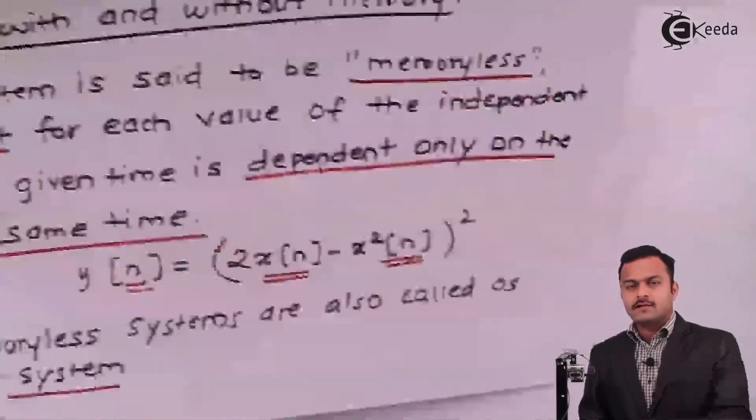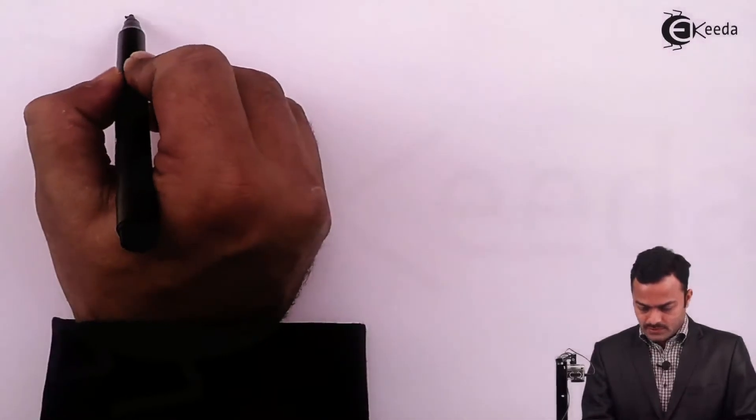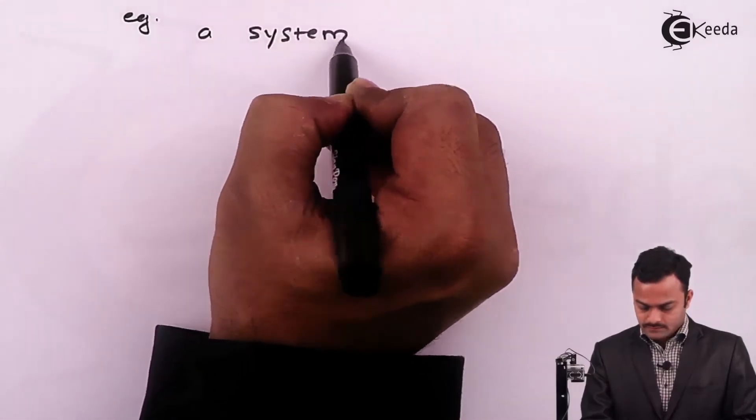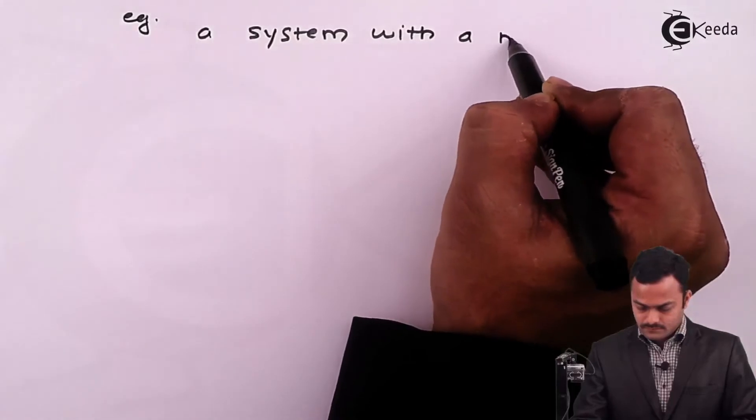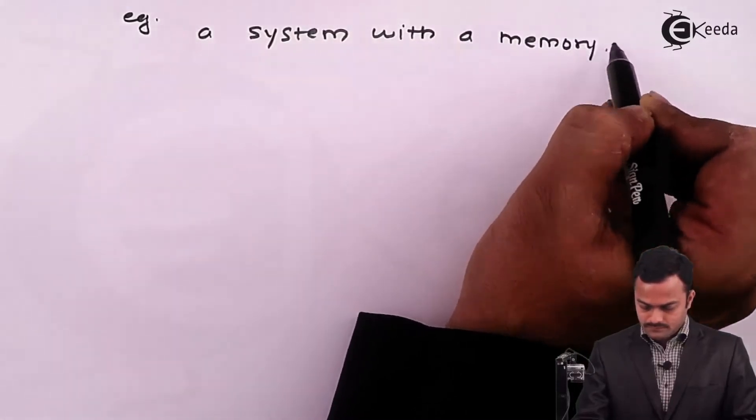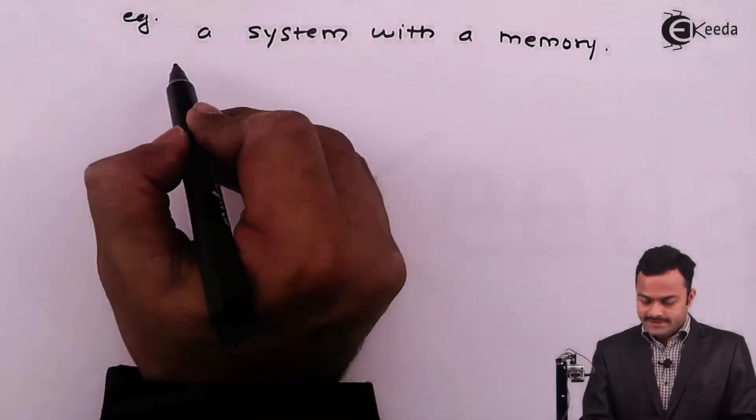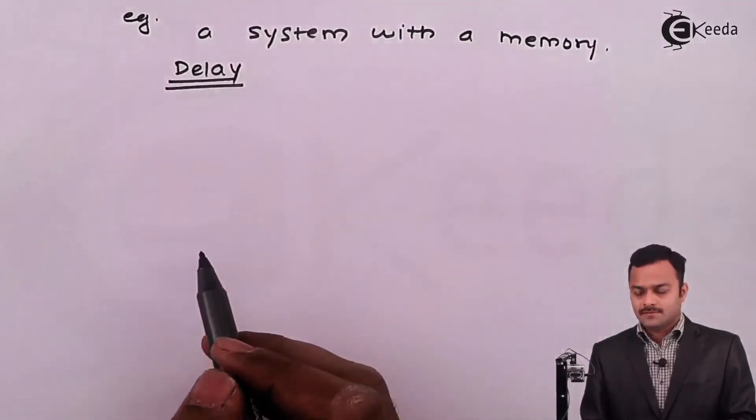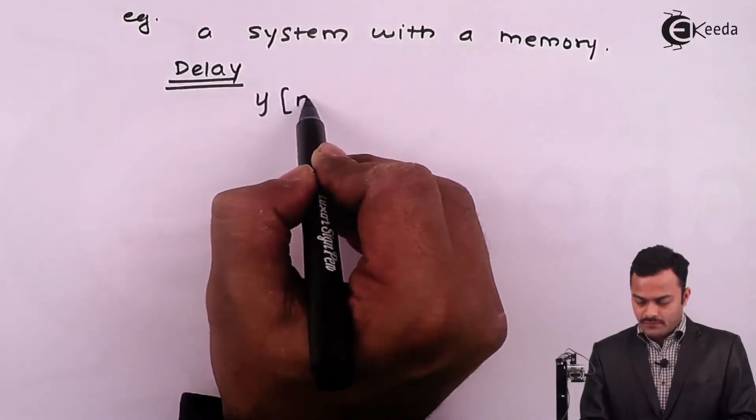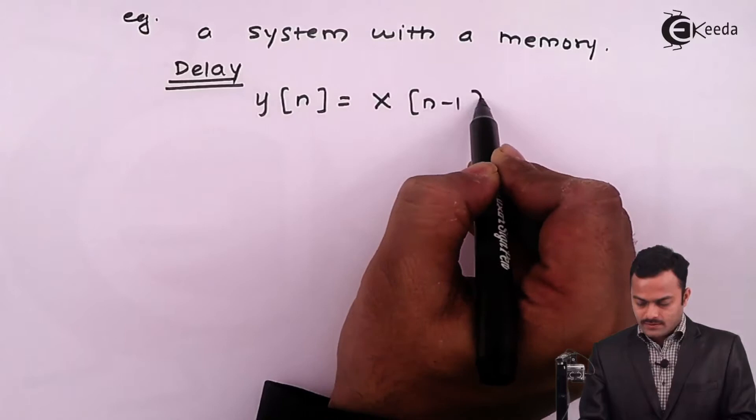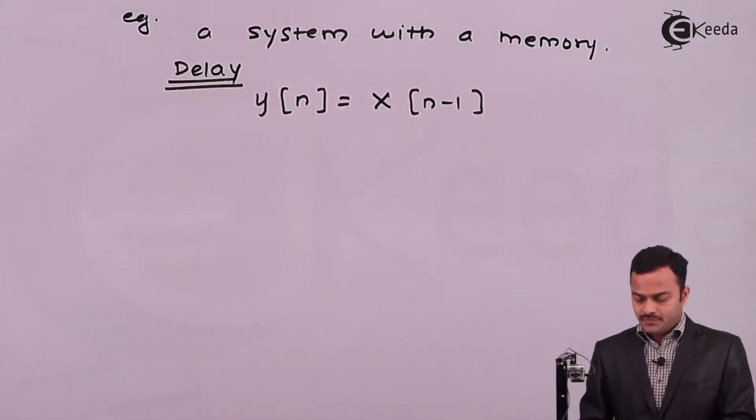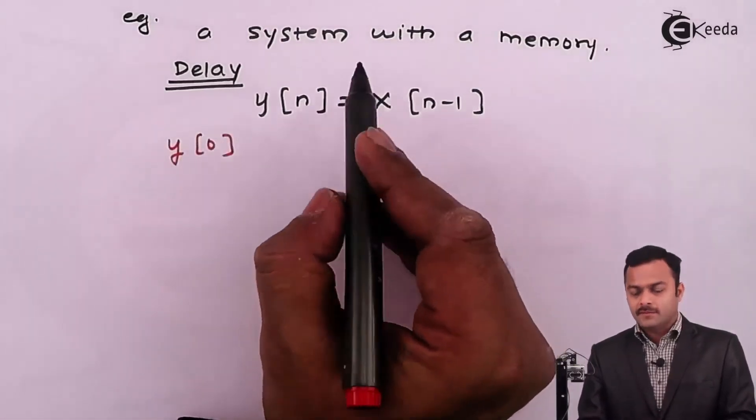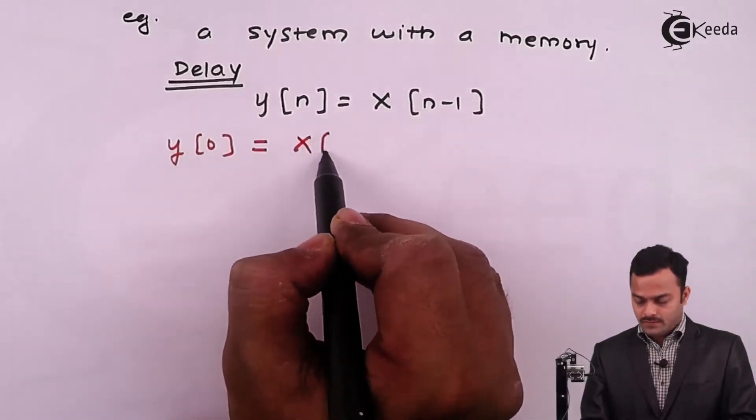Let's write an equation for system with memory. Example of system with memory: a simple example is delaying any sequence, a delay of input signal. System represented by y[n] = x[n-1]. Suppose I want to know what is y[0], as per the system equation y[0] is nothing but x[-1].